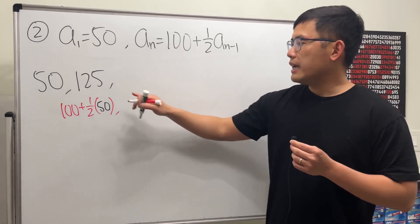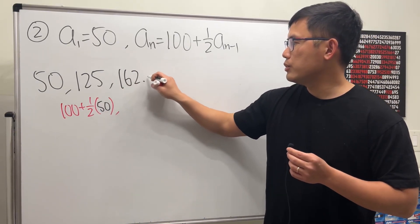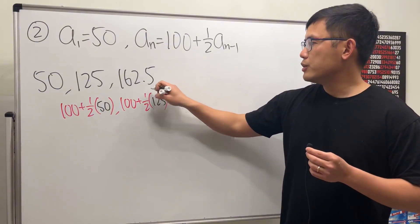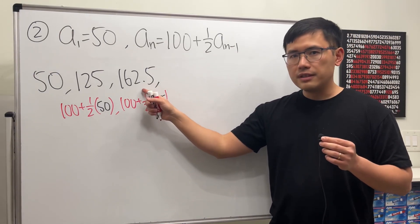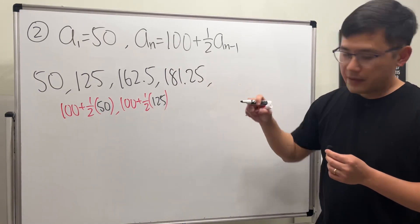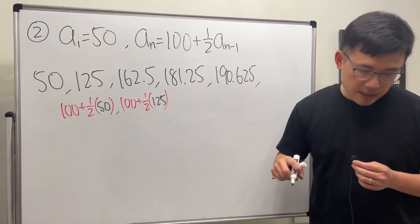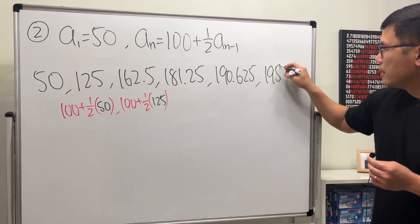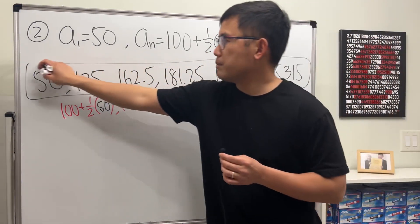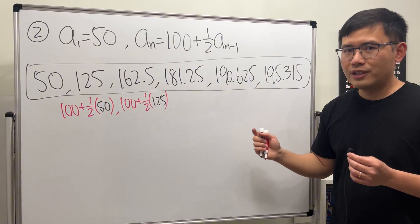Continuing: take half of 125, which is 62.5, and then add it with 100. Then take half of that and add 100 — we end up with 181.25. Continuing, we get 190.625, and the last term we have is 195.3125. As you can see, there's a very nice pattern: these numbers are approaching 200.